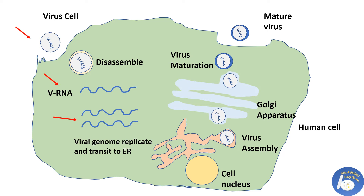New structural proteins are formed, and the virus starts to reassemble on the surface of the endoplasmic reticulum of the human cell. It then buds out from it. The immature particles are transported to the Golgi apparatus, where they mature and convert into the infectious form called the virion. The mature virus is then released from the cell and starts infecting other nearby human cells.